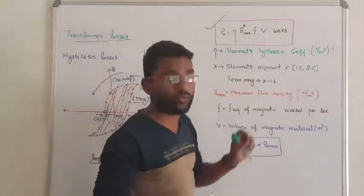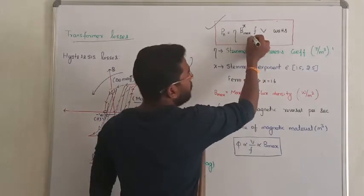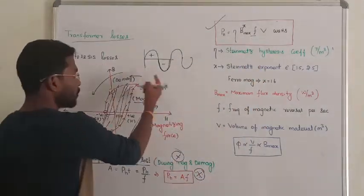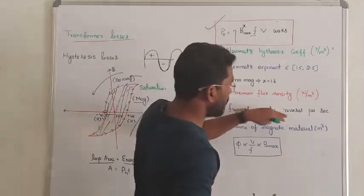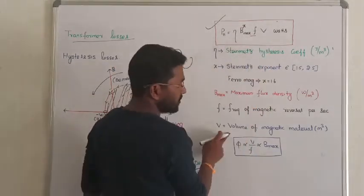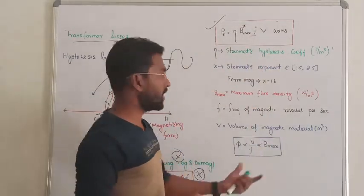Its value lies between 1.5 to 2.5. F is the frequency of the magnetic reversal per second - the positive-negative reversal frequency. V denotes the volume of the magnetic material.